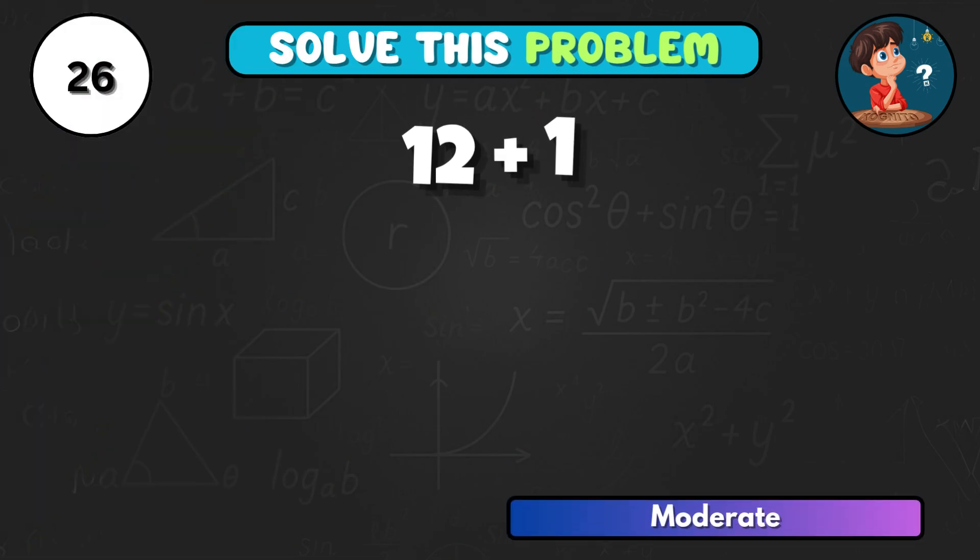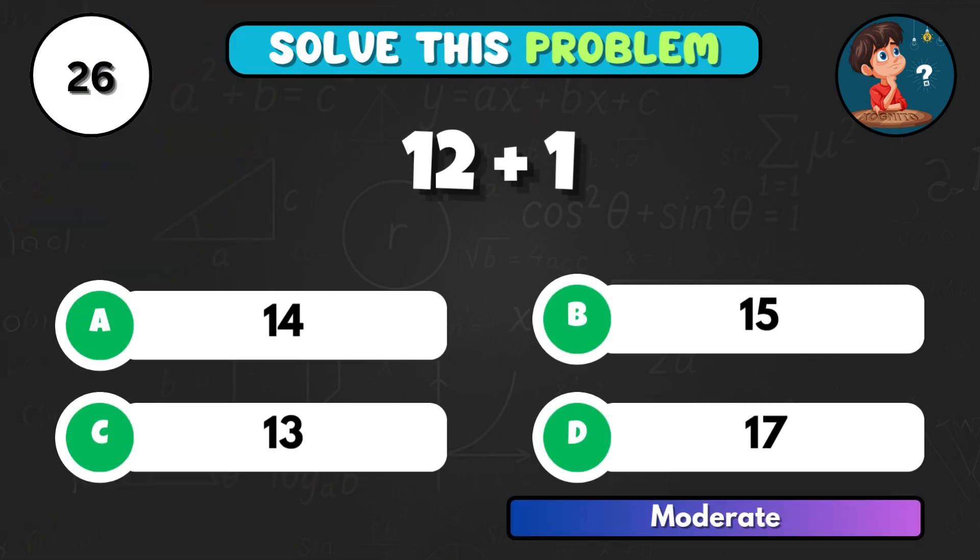What happens when you add 12 and 1? Correct choice C, that's 13.